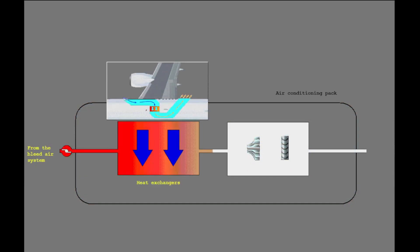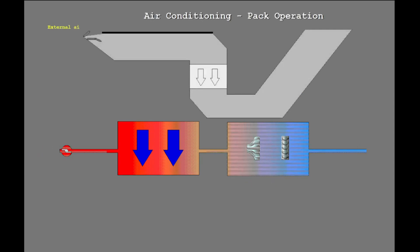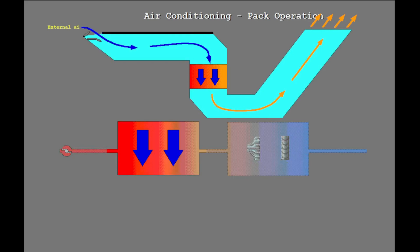The packs decrease the temperature of the warm air from the bleed air system with a sequence of heat exchangers and an air cycle machine. The heat exchangers use external air flow to decrease the temperature of the warm bleed air. The ram air doors control the flow of external air to the heat exchangers.